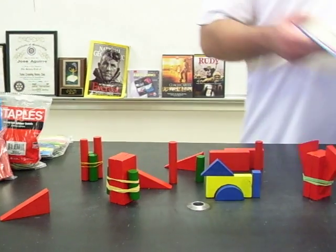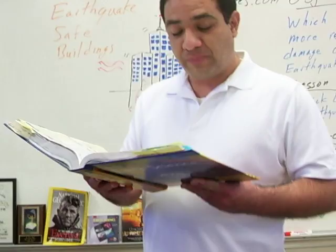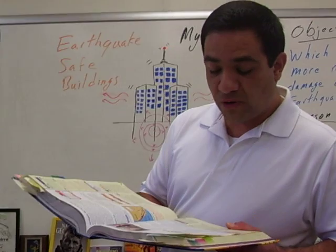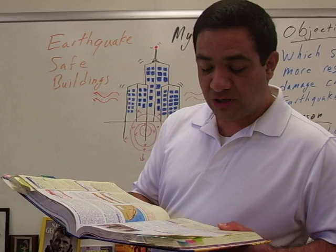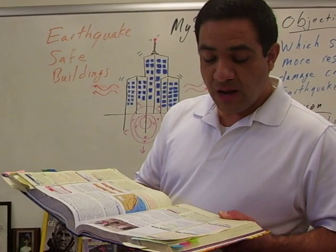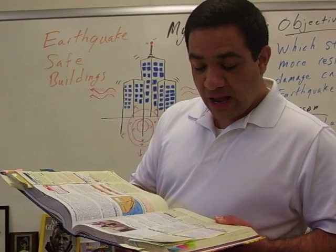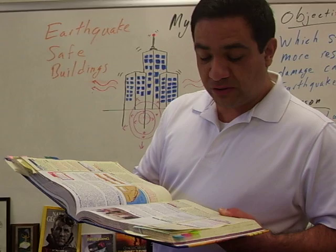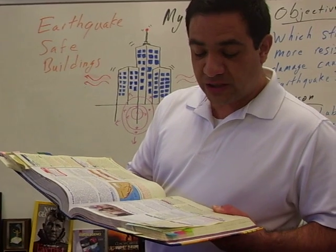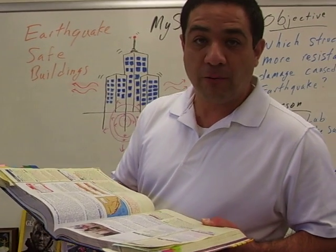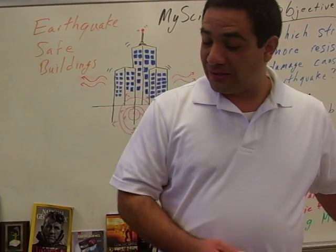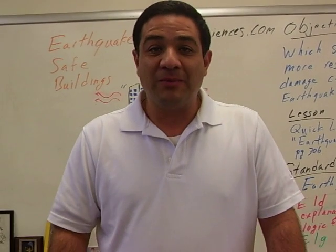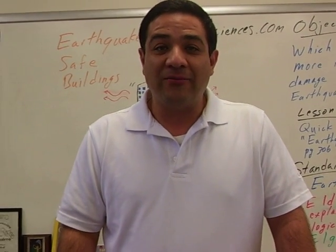What they have to answer afterwards is the analysis. Number one: which of your structures was more resistant to damage caused by an earthquake? Number two: how could this model relate to building real structures such as elevated highways? That's the quick lab, and this is Mr. Aguirre signing off.